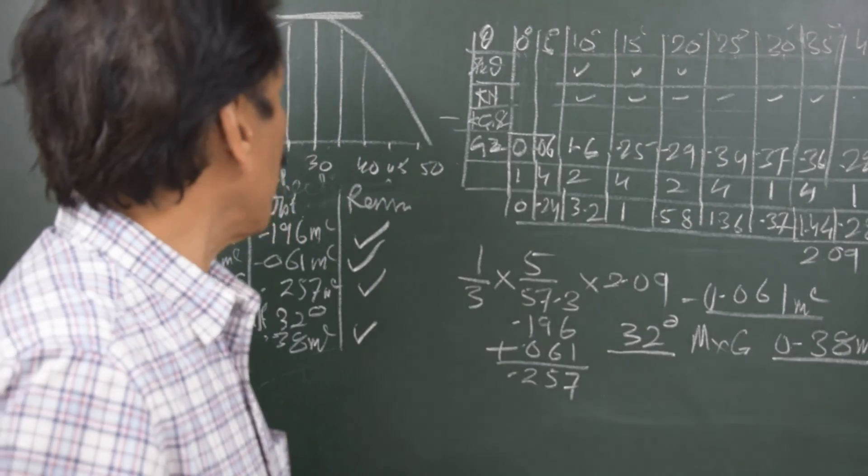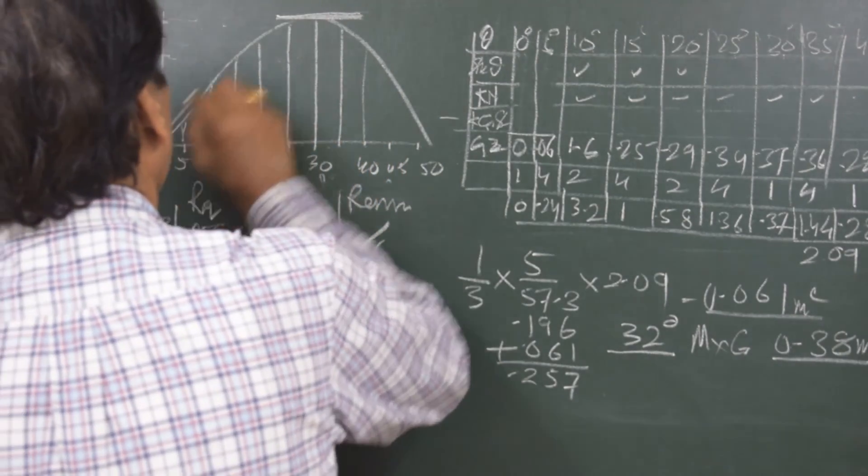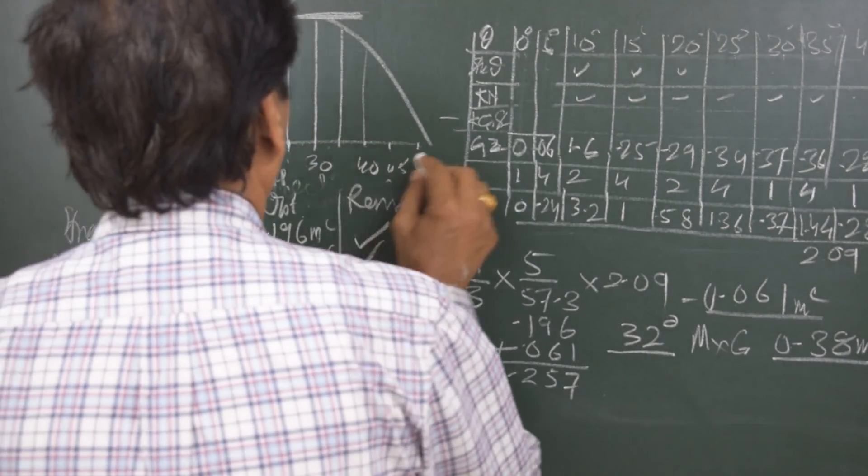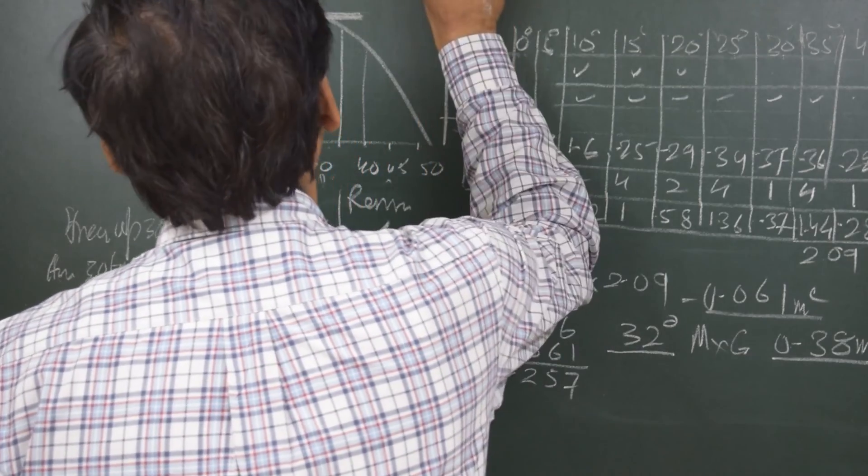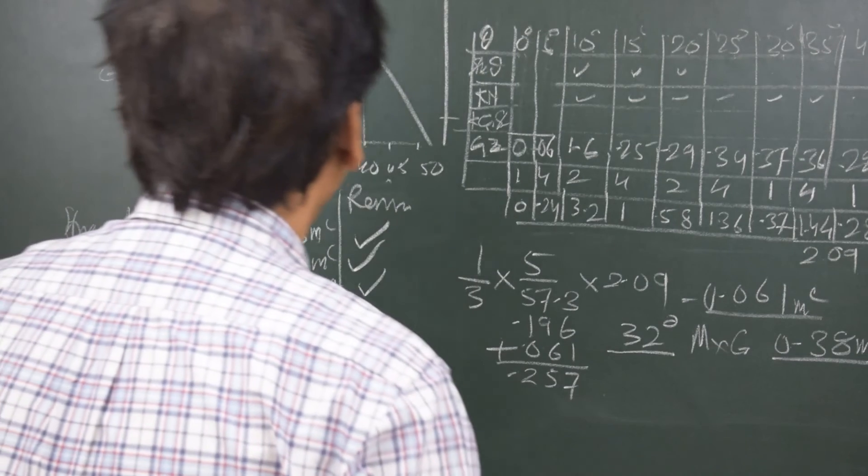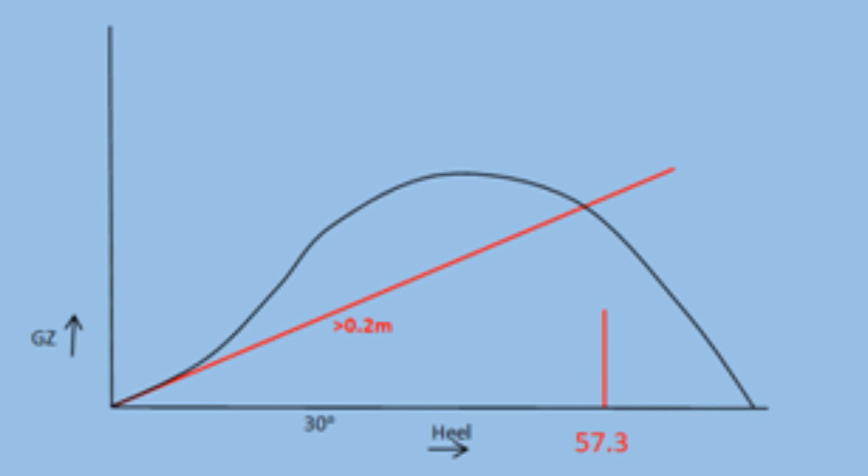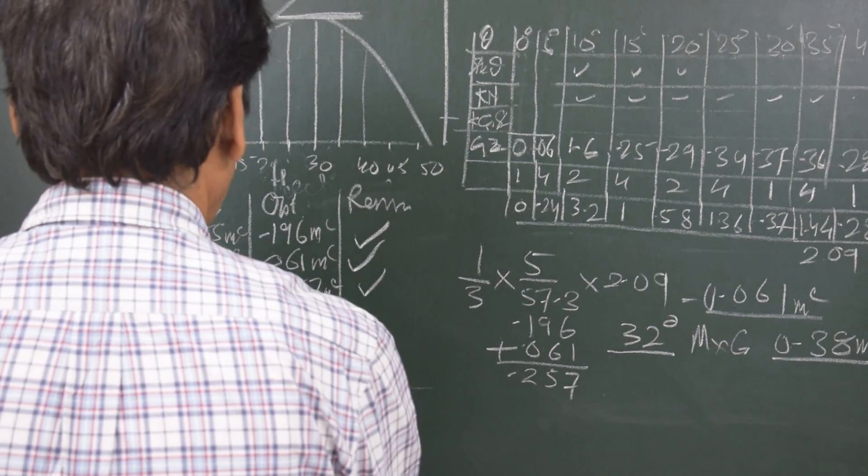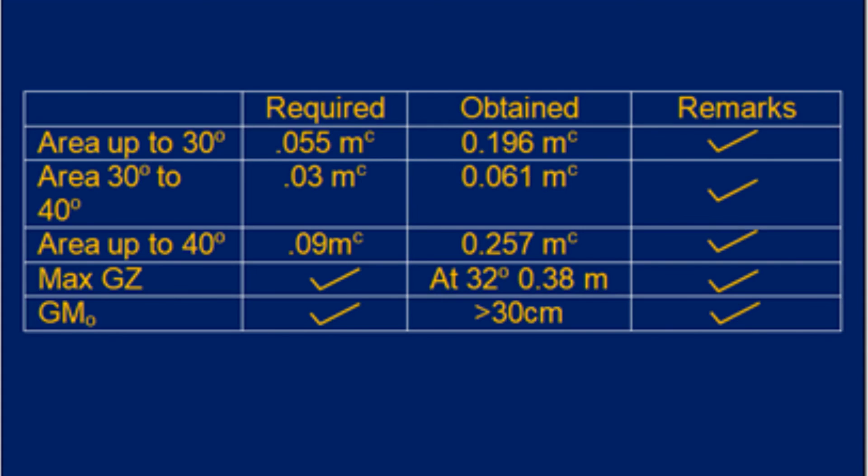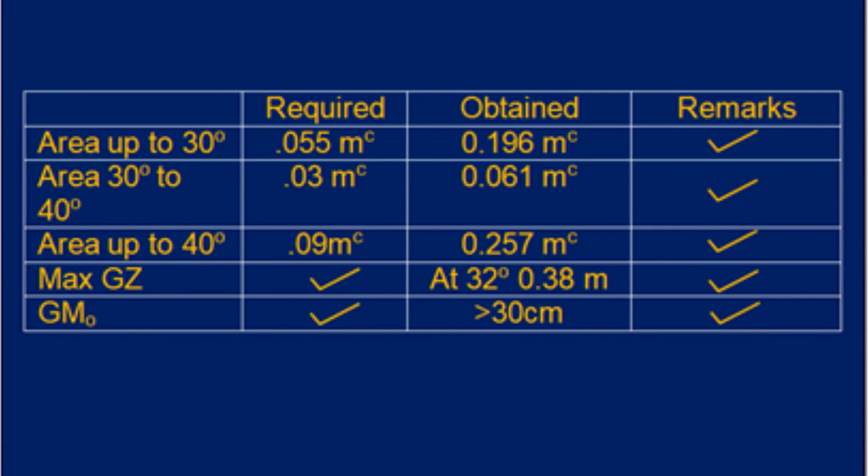Now what I do is I put a tangent at origin and I measure at an angle 57.3. You can see that it is way beyond the requirement of 15 centimeter. So the GM, the initial GM that is the metacentric height is much more than 30 centimeters. So this criteria is also satisfied.